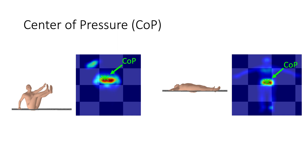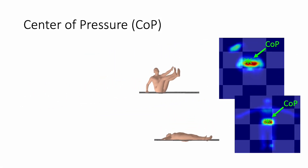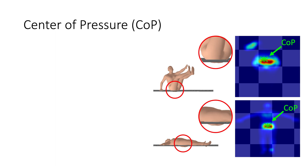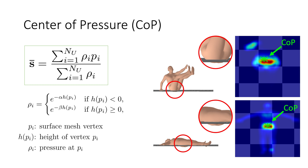To compute the center of pressure, we estimate the per-vertex pressure distribution of the body-ground contact. However, recovering the pressure distribution from single images is highly ill-posed. Our key insight is that while real bodies interact with rigid objects like the floor and deform under contact, SMPL does not model such interaction-dependent soft tissue deformations. Consequently, the body mesh penetrates the floor. We use the amount of penetration as a proxy for pressure — deeper penetration implies higher pressure. We verify this assumption in experiments with ground truth pressure measurements. With this proxy pressure map, the center of pressure is computed as the average of the sampled SMPL surface points weighted by their corresponding pressure values.